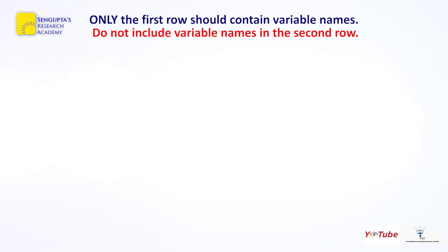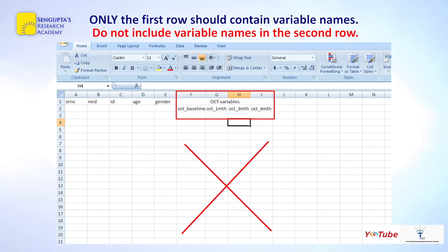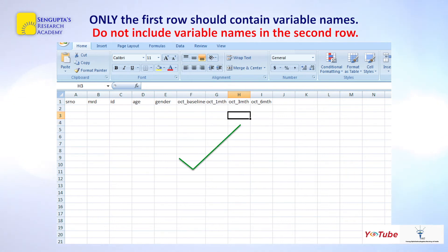Only the first row should contain variable names — that is the thumb rule. Do not include variable names in the second or any other row. This is an example of what should not be done: the first row says 'OCT variables' and then you have OCT at baseline and one month, etc. The right way is to have variable names only on the first row, not the second or fourth rows, as that cannot be consumed by the statistical analysis software.